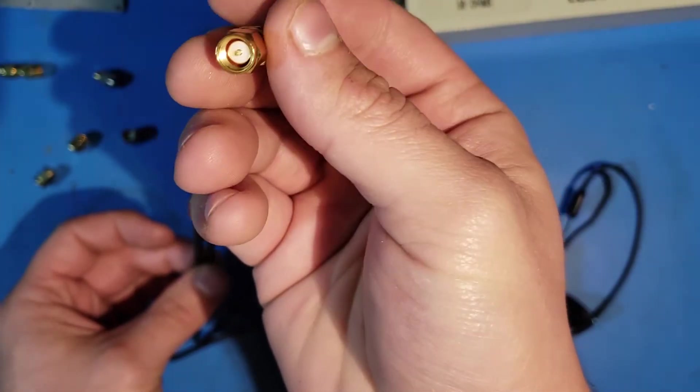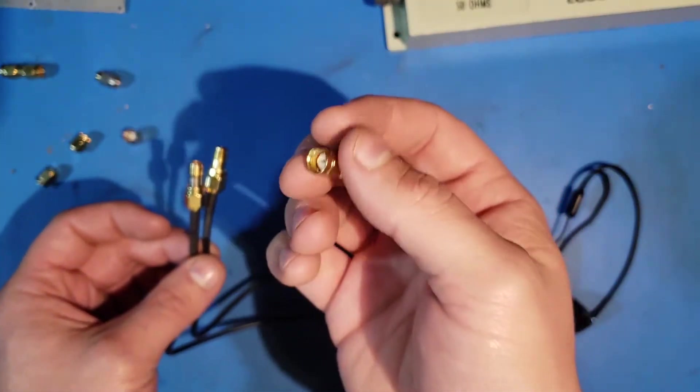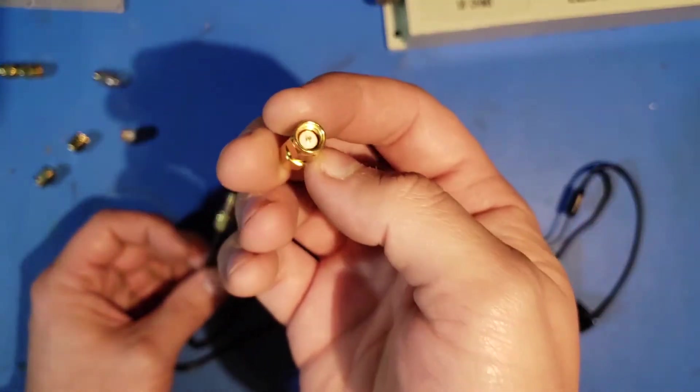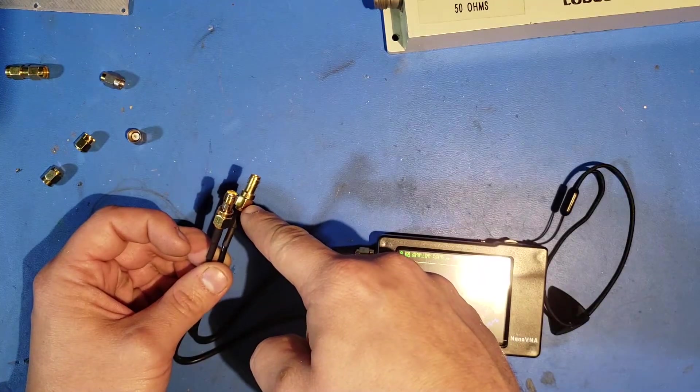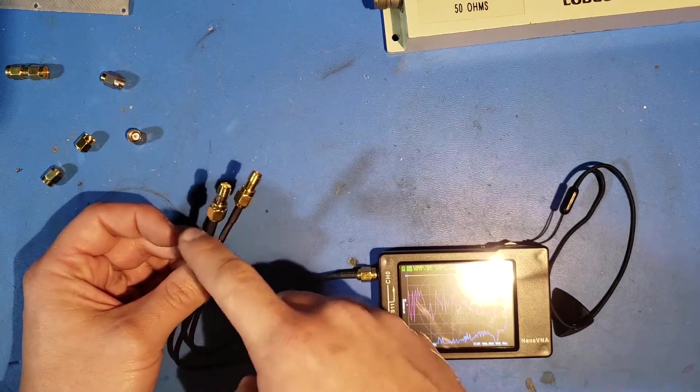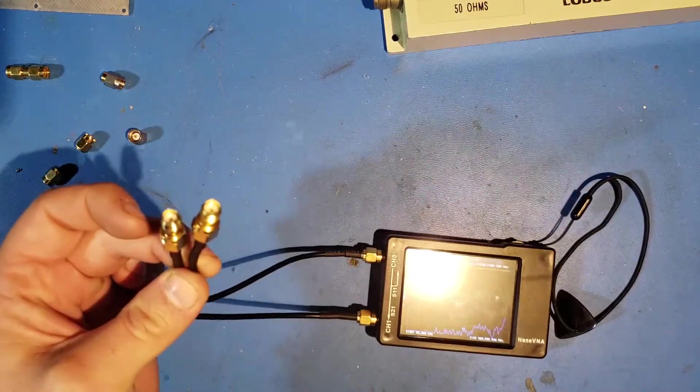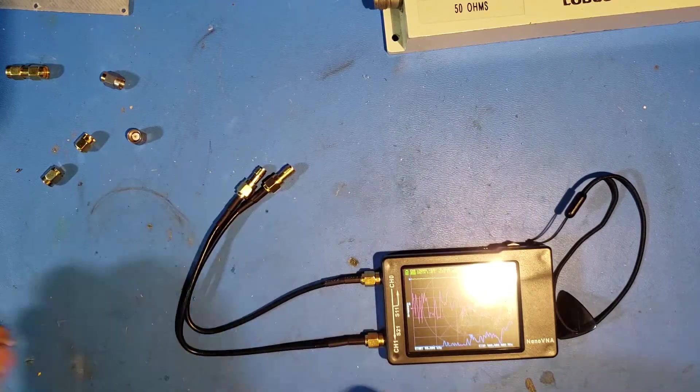This is a rather cheap through standard, and the through is always the part that I have the most issues with getting a good calibration for. But this is going to be better than taking one of these off and running the through calibration at a different point on one of these cables than the rest of the calibration. To be consistent, we'll run it at the end of these cables.